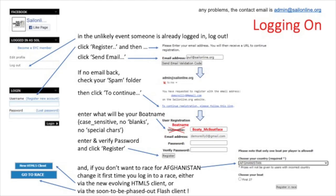So you want to register for sailonline.org? On the homepage, top left, click on 'Register new account', enter your email address and hit send. You'll receive an email with a line which reads: 'To continue registration, please follow this link' — click on that whole line. A screen comes up asking you to enter a username and a password and then to verify the password. Your username will in fact be your boat name, so choose it carefully.